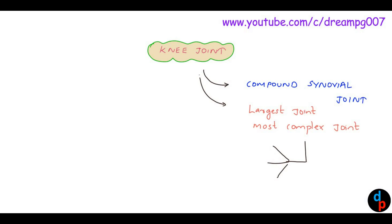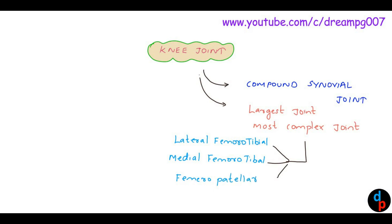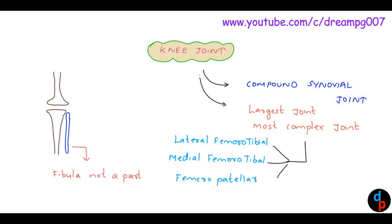Which are the simple joints that form this complex knee joint? It includes the lateral femorotibial joint, the medial femorotibial joint, and the femoropatellar joint. An important point to remember is that the fibula is not a part of the knee joint.